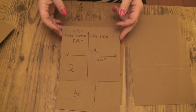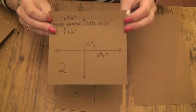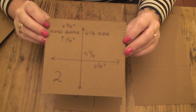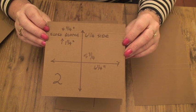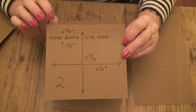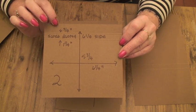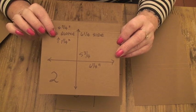Piece two, cut one, is 5¾ inches wide by 6¼ inches deep and again it's scored at ¾ of an inch and 1¼ inches along the 6¼ inch side.